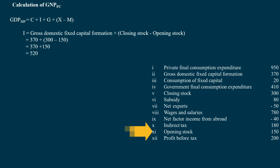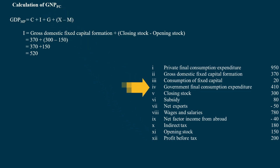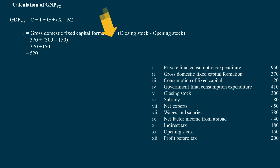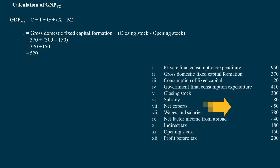Investment I = 370 + 300 - 150 = 520 Crores. G, Government Final Consumption Expenditure = 410 Crores. X minus M, Net Exports = negative 50 Crores.